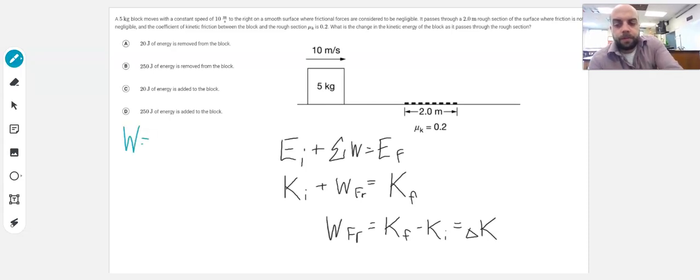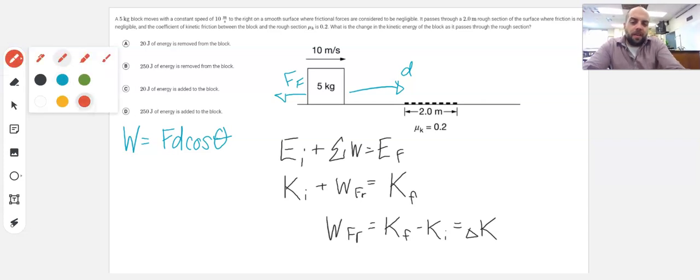Now, with work, we're talking about F·d·cos(θ), where F is the force of friction and d refers to this displacement moving to the right. Together, they make a 180 degree angle. So this cosine is going to be cos(180°), which is negative 1.